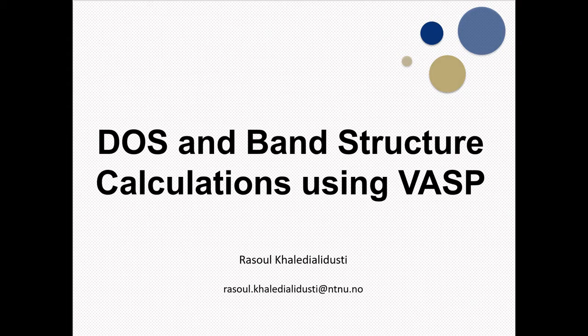We will look at what points we need to take into consideration to get more accurate results and remove the inconsistency between density of state and band structure calculations. This is very important — we may face the problem that our density of state and band structure calculations are not consistent. For example, the band gap in our density of state calculation may be larger than in the band structure, or the band structure may show a metallic system while the density of state shows a semiconducting system with a band gap.